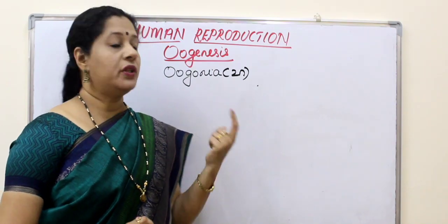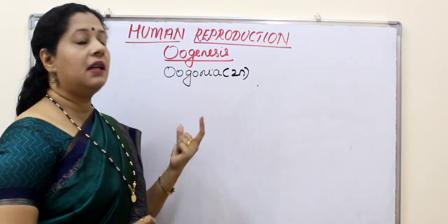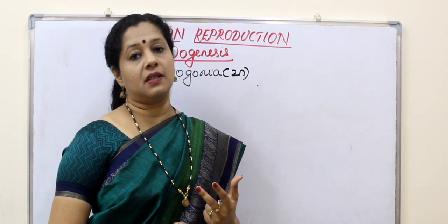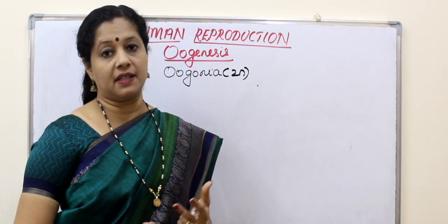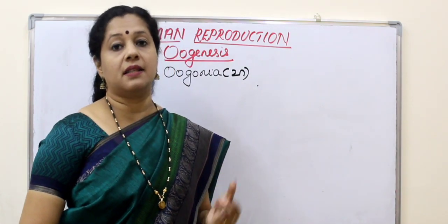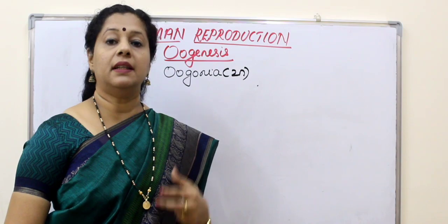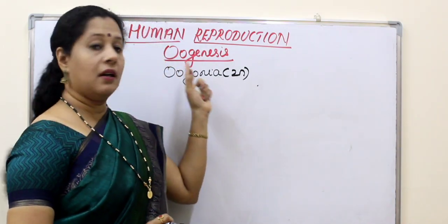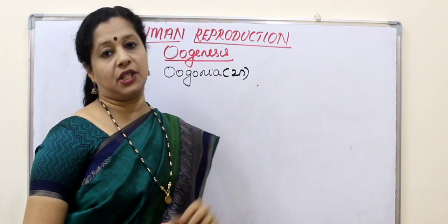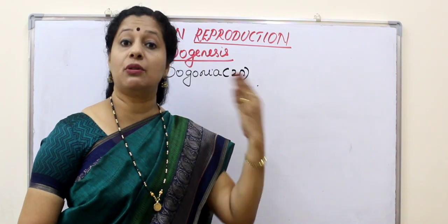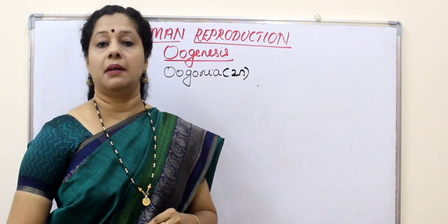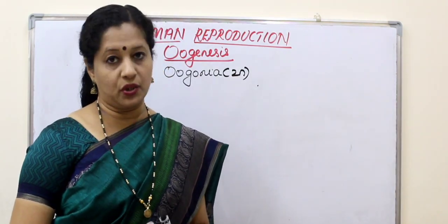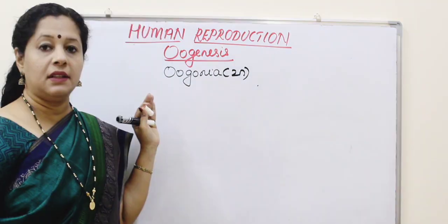Oogenesis can be divided into three phases: the first phase is called the multiplication phase, the second is the growth phase, and the third is the maturation phase. The multiplication phase is happening prior to the birth of the baby girl.